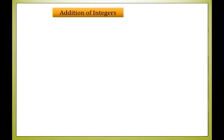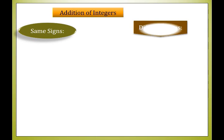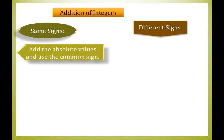Now let's discuss addition of integers. For addition of integers, we have 2 cases to consider: integers with the same signs, and integers with different signs. When integers have the same sign, all you have to do is add the absolute values and use the common sign. So if you add 2 negative integers, the sum is also a negative integer. If you add 2 positive integers, the sum is positive.